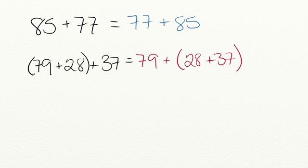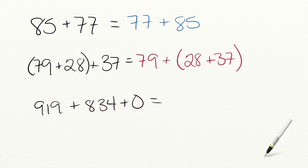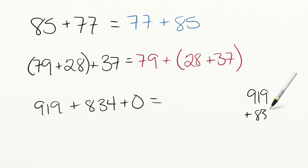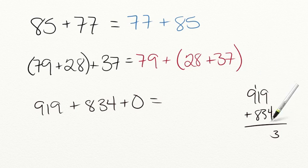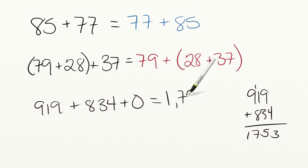Let's try our last problem practicing the property of zero in addition. If you add 919 plus 834 plus 0, what sum do you get? Adding 919 plus 834: 9 plus 4 is 13, carry the 1; 1 plus 3 plus 1 is 5; 9 plus 8 is 17. And adding 0 doesn't change anything. So our sum is 1,753.